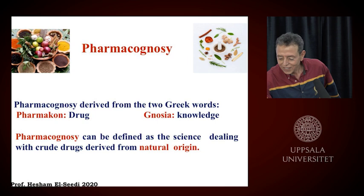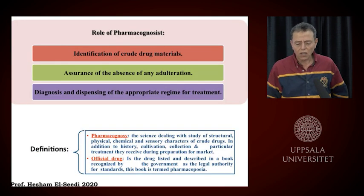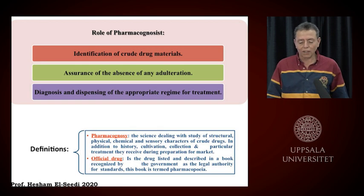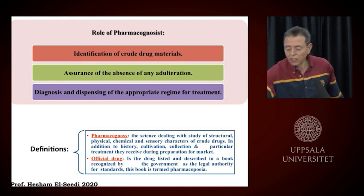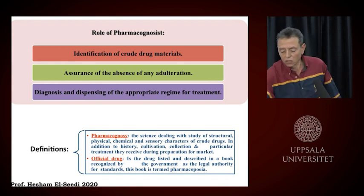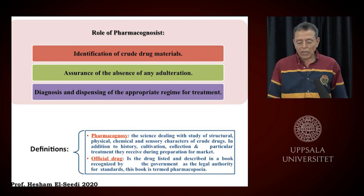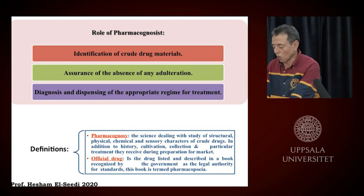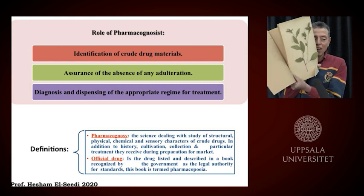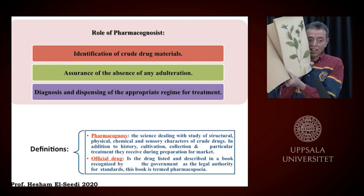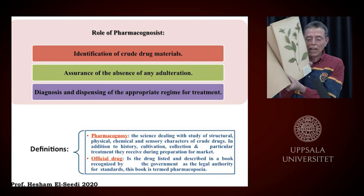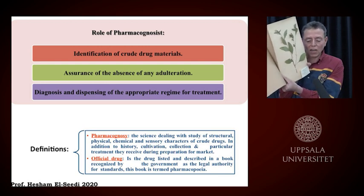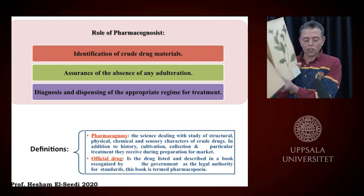Let us start with the role of pharmacognosy — how important you are. Number one: identification of crude drug material, how to identify it until you get it as a drug. Assurance and absence of any adulteration — is there any adulteration? Everything must be documented from the beginning. To get the plant material, identification by a botanist and having an authentic sample means absence of any adulteration.